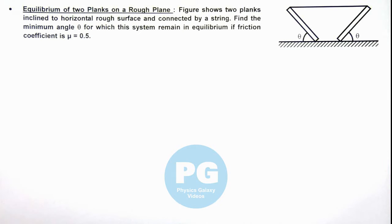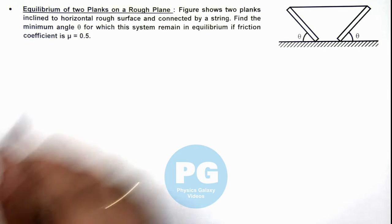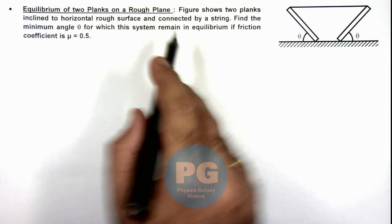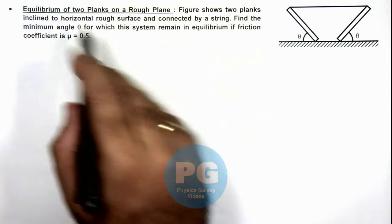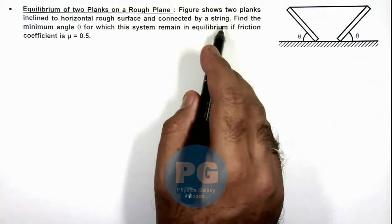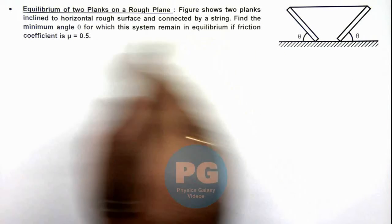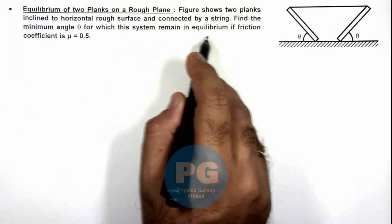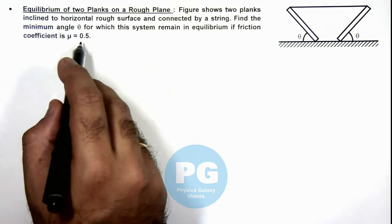In this illustration we'll discuss equilibrium of two planks on a rough plane. The figure shows two planks inclined to horizontal rough surface and connected by a string. Here we are required to find the minimum angle θ for which this system remains in equilibrium if friction coefficient is μ = 0.5.